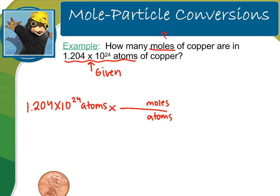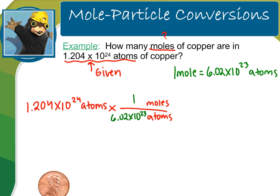Since we know dimensional analysis, atoms go on the bottom and moles go on the top. Now I know that 1 mole is equal to 6.02 times 10 to the 23rd atoms, so I can use this conversion factor. One mole goes on top and 6.02 times 10 to the 23rd atoms goes on the bottom. Always show the canceling of units — atoms cancel, and I've ended up with moles on top.